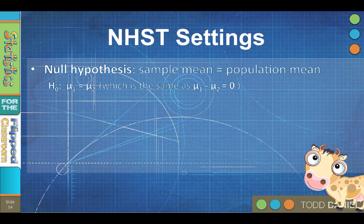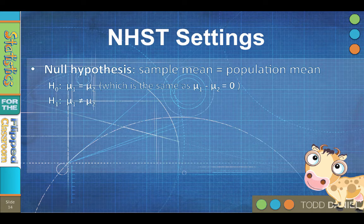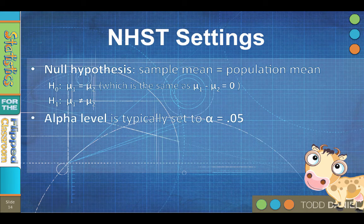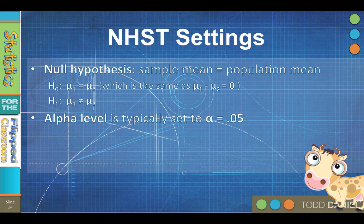The alternative hypothesis would be H sub 1, colon, mu1 does not equal mu2. The alpha level is typically set to an alpha of 0.05, but it could be set to 0.01 or another level chosen by the researcher.